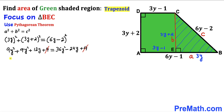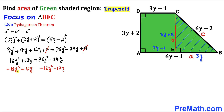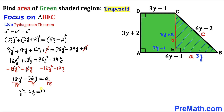Combining like terms on the left gives 18Y² plus 12Y equals 36Y² minus 24Y. Subtracting 18Y² and 12Y from both sides: 18Y² minus 36Y equals 0. Since every term is divisible by 18, we divide through by 18, giving us Y² minus 2Y equals 0.